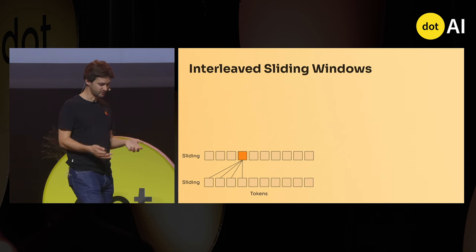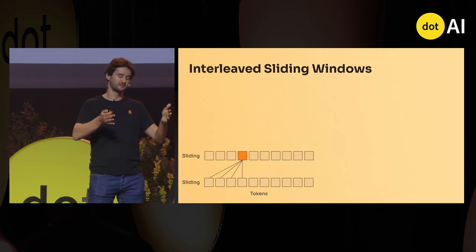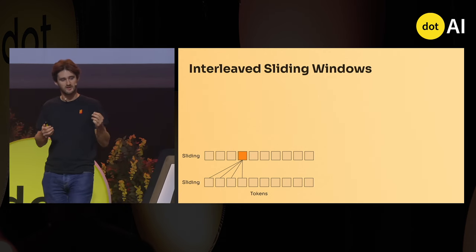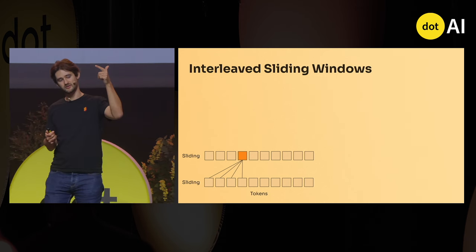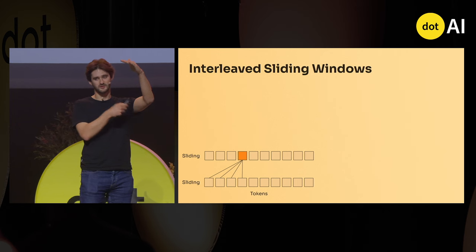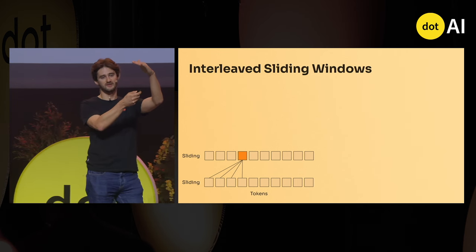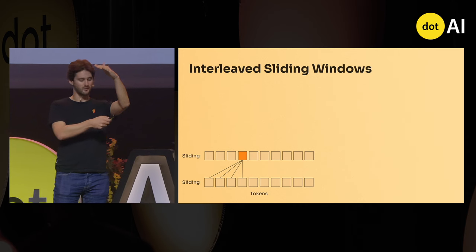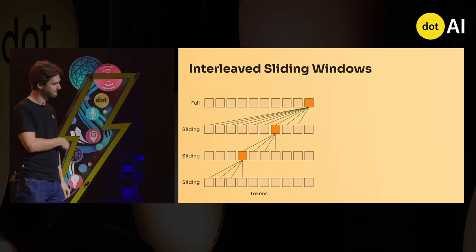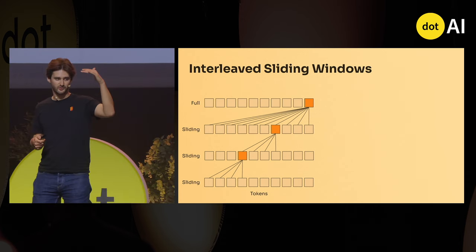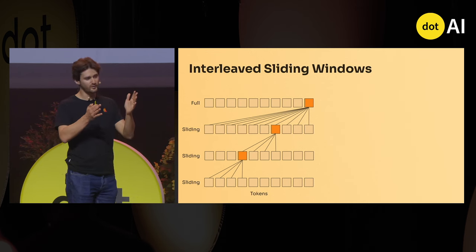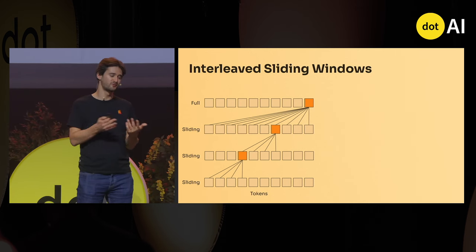It's a mix of local and global attention. For local attention, you allow one token to look only at the nearest, say, four tokens in the past — it's local. But if you stack local patterns, the second layer will be able to see eight tokens in the past, because it can see four tokens in the past and that token will have information about the token before.